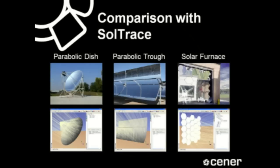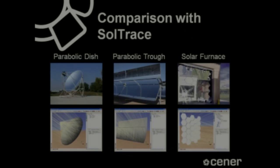For each of these systems, we compare the estimates produced by Tonatiuh and SolTrace for: the total power at the target or receiver; the frequency distribution of photons as a function of target position or receiver angle; and the absolute maximum flux density reached on the target or receiver.